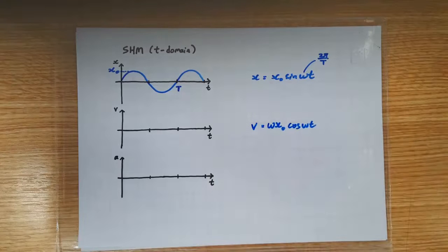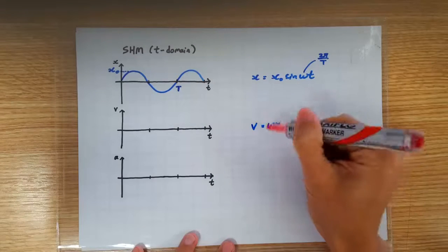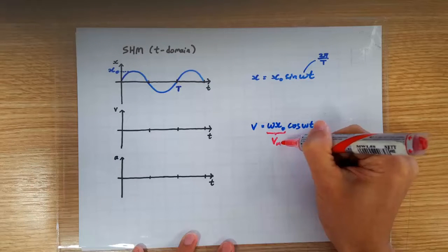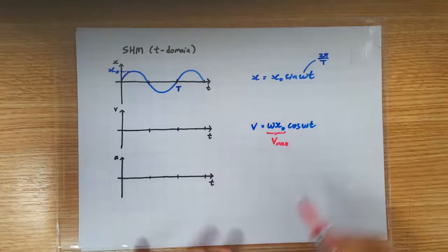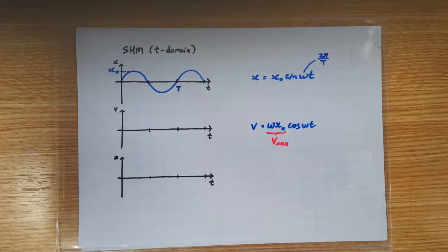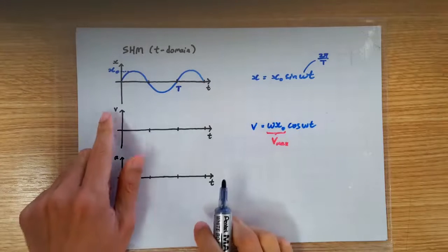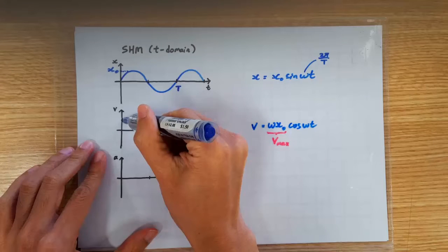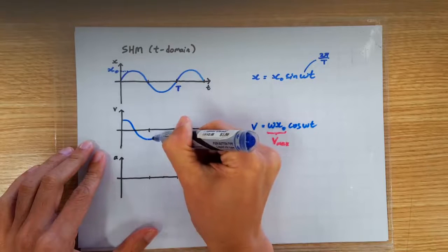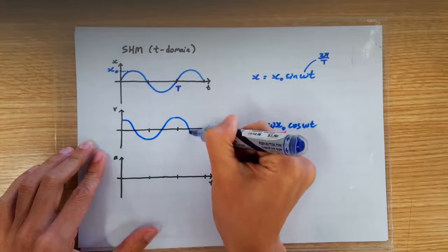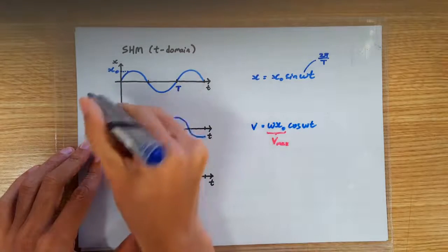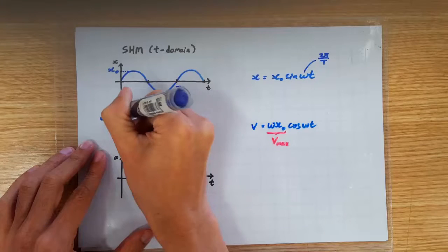And immediately, we recognize that ωx0 must correspond to the maximum velocity of the oscillation. So, the v-t graph is cos ωt, and the maximum velocity is given by ωx0.